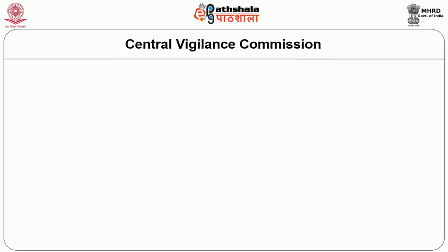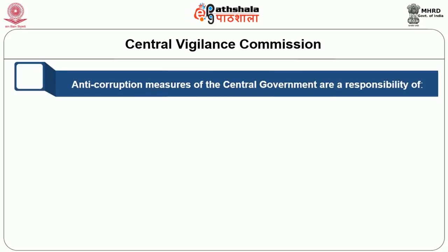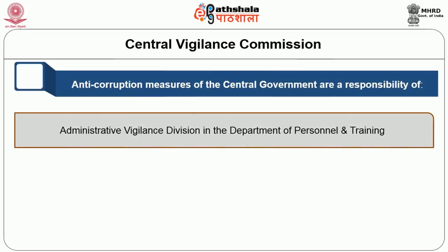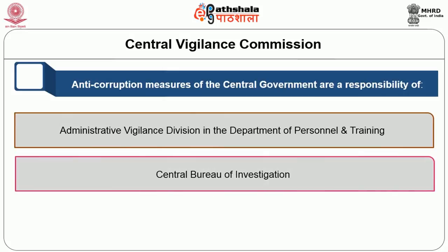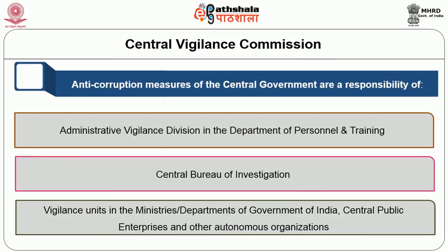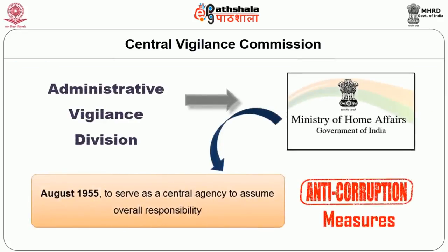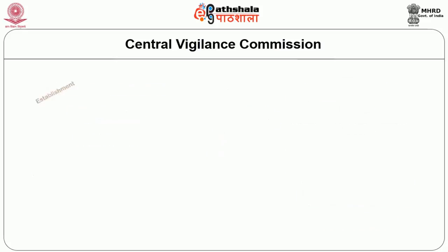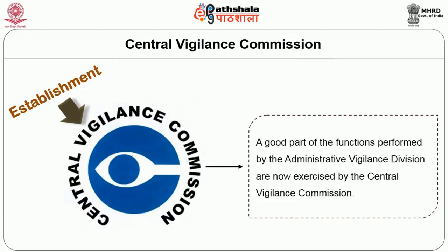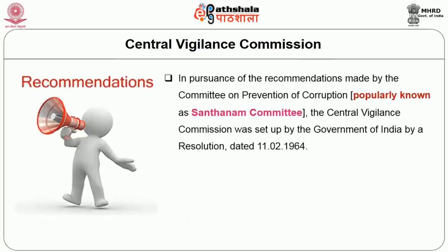Anti-corruption measures of the Central Government are a responsibility of the Administrative Vigilance Department in the Department of Personnel and Training, the Central Bureau of Investigation, Vigilance Units in Ministries and Departments, Central Public Enterprises and other autonomous organizations, the Disciplinary Authorities, and the Central Vigilance Commission. The Administrative Vigilance Division was set up in the Ministry of Home Affairs in August 1955 as a central agency for anti-corruption measures. With the establishment of the CVC, a good part of those functions are now exercised by the Commission. The CVC was set up by the Government of India by a resolution in 1964, pursuant to the recommendations of the Committee on Prevention of Corruption, popularly known as the Santhanam Committee.